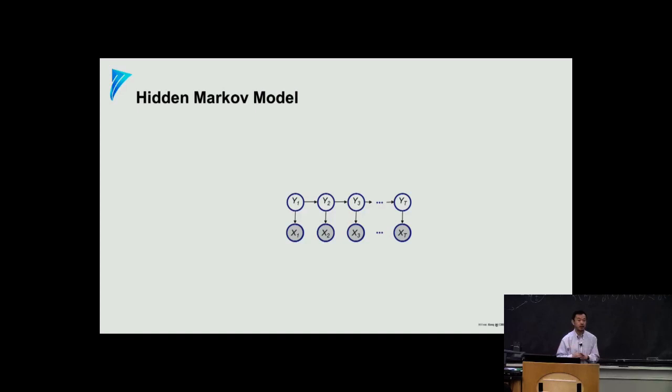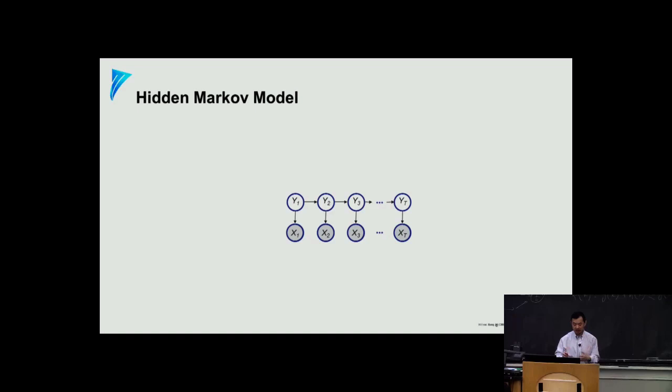In fact, what we just did is building a model known as the Hidden Markov Model. Why 'Hidden Markov'? First, the y's are not observed — they are hidden. And the way the y's are generated follows what is known as a Markovian property: the future is independent of the past given the present. That's a first-order Markov model — the immediate future is independent of the immediate past given the present. You can always extrapolate into higher orders. This is a powerful model.